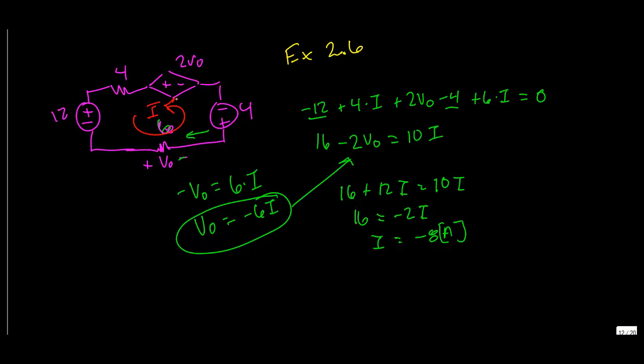Alright, so now we know that the current is minus 8 amps. So VO is, we already said VO is right here. So we got minus 6 times minus 8, which is equal to 48 volts. So VO equals 48 volts.